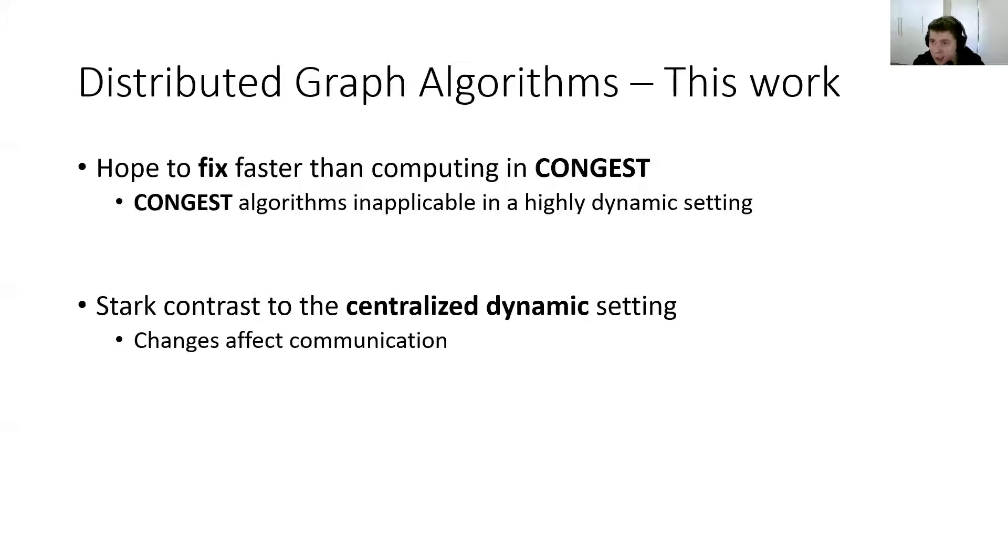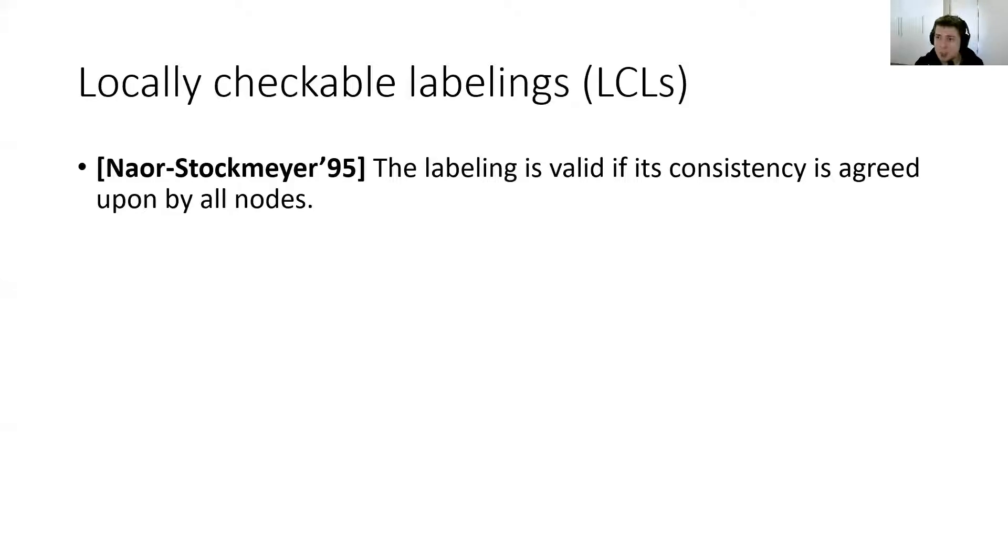The highly dynamic setting is also in stark contrast to the centralized dynamic setting. In the centralized setting, when the computation happens on one computer, you can deal with those changes incrementally and always maintain a global solution. Because we work in the distributed setting, this is more problematic because changes also affect communication. If an edge is deleted from the network, then the nodes which were the endpoints of this edge can no longer communicate on it. Thus, obtaining a global solution is hopeless unless, of course, your algorithm finishes in zero rounds. Hence, we need to be more careful when we refer to notions such as fixing solutions.